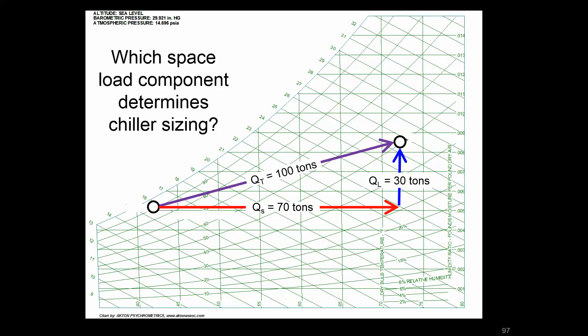What do we care about when we're looking at the plant? So you think it might be the Q sub T, Q sub L, Q sub S. If we had one of these tonnages associated with the zone load, which of these tonnages would you then use to size a chiller?